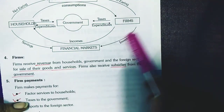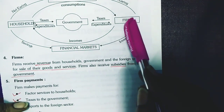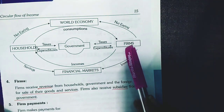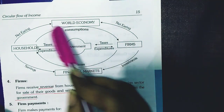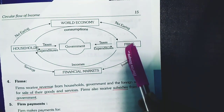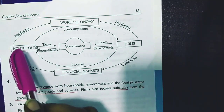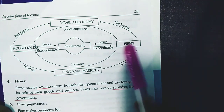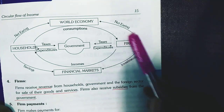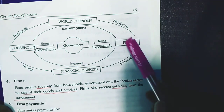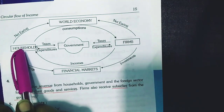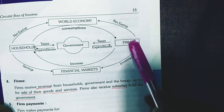The firm receives money from household, government, and the foreign sector by providing goods and services to all sectors. The firm has three types of payments: paying wages to households, paying taxes to the government, and paying import expenses for raw materials sourced from the foreign sector.